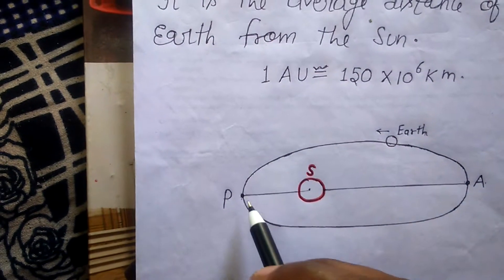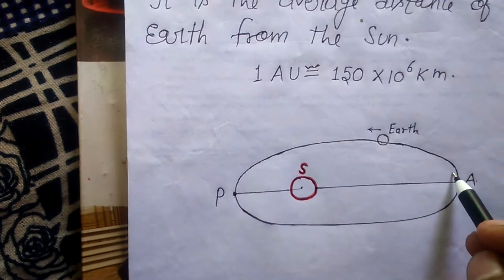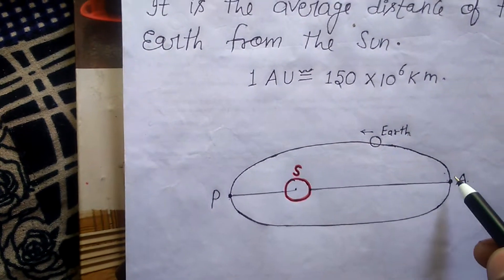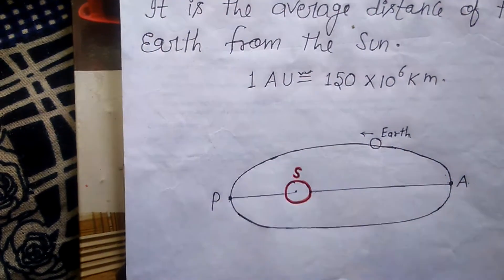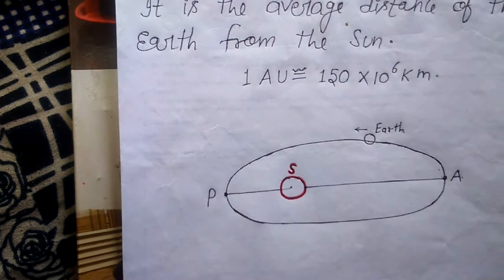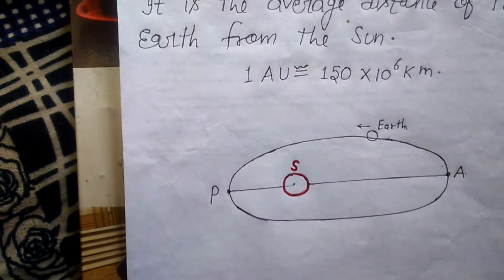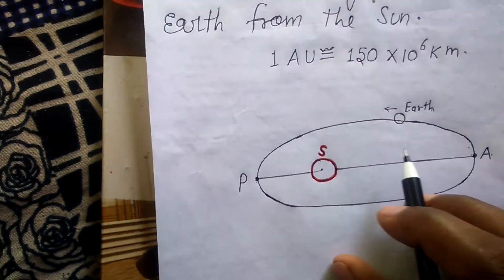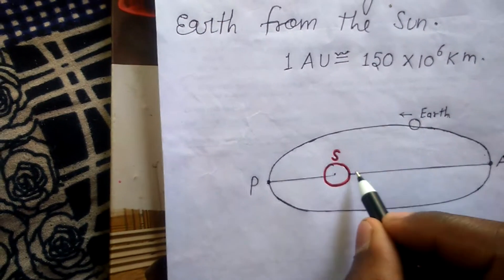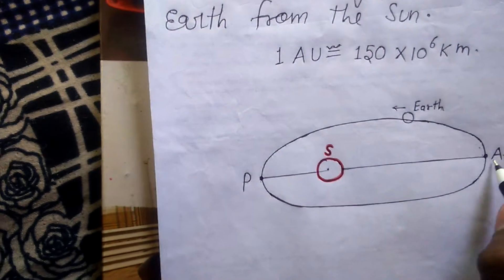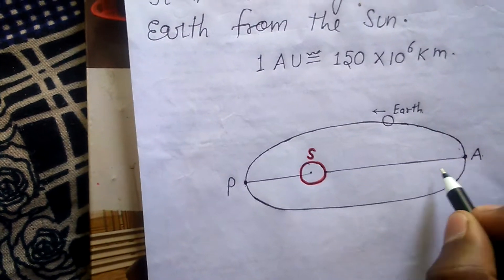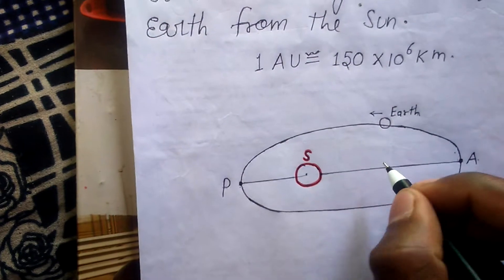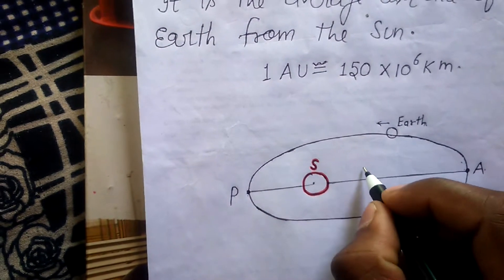When the earth travels from point P to point A, it takes six months, and again from A back to P it takes six months, so the total revolution takes one year. The distance from the sun to point A — the aphelion — is the maximum distance.